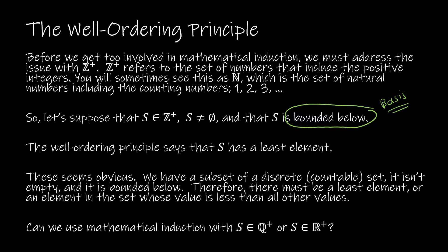We have a subset of discrete — which just means countable — objects. It's not empty, it's bounded below, therefore there must be a least element. It's important that we're using Z plus here because if you think about Q plus — Q being the rational numbers, anything we can write as P over Q — there is no least element. We could say 1 half, but 1 third is less than that, 1 50th is less than 1 third, 1 100th is less than that, and we can always make the denominator larger. The same goes for all real numbers, so it's very important that we're using the integers for mathematical induction.